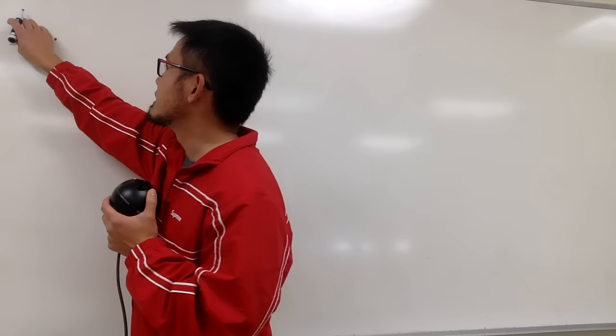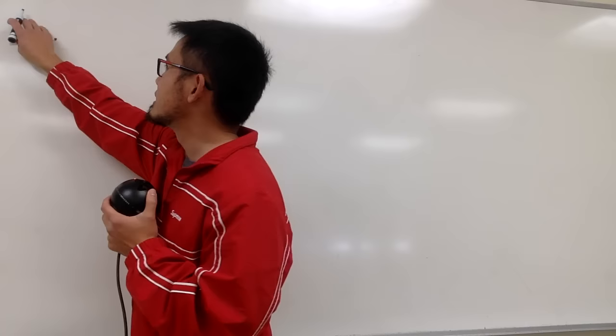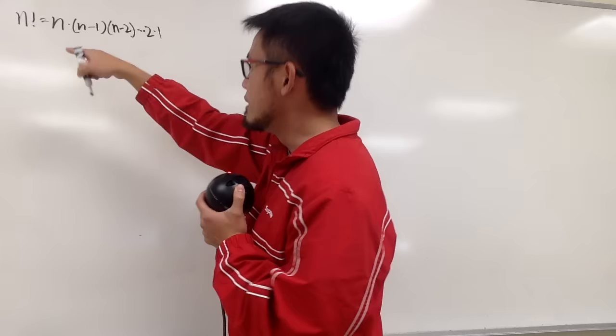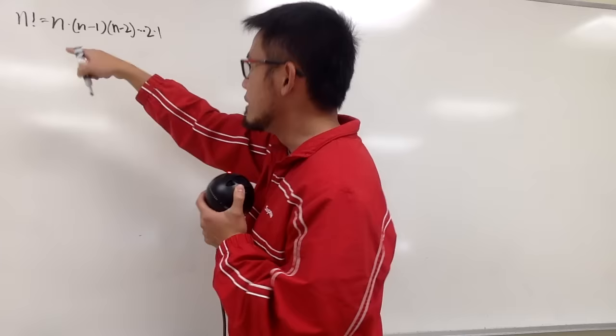And in general, this is the usual definition of n factorial. When we have n factorial, all we have to do is go ahead and do n times the next one, which is n minus 1, and then n minus 2, and so on, until we reach multiply by 2 and multiply by 1. This is the usual definition of n factorial.